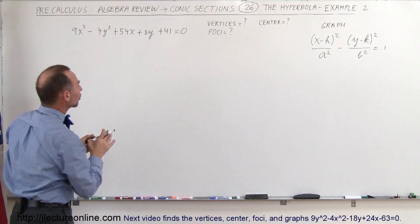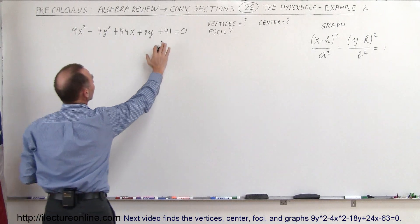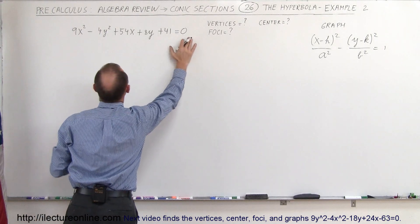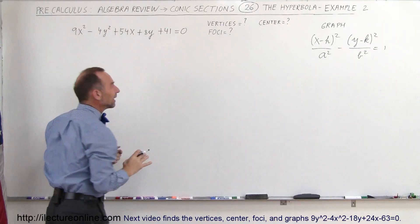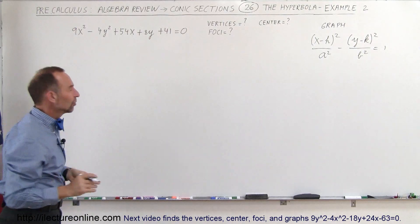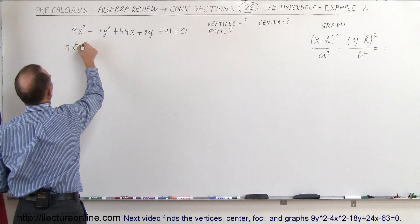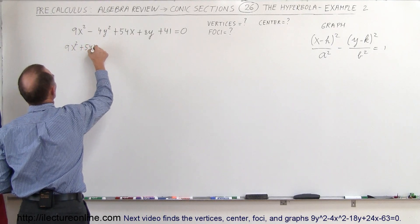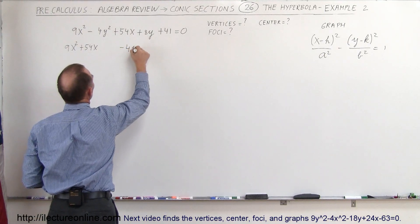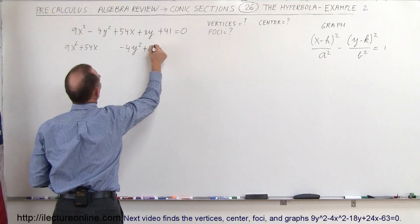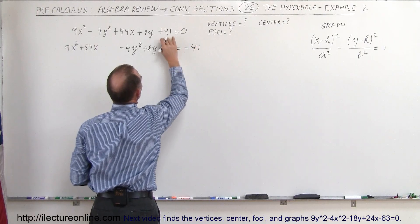We're going to use the completing the square method. That means we want to get the 41 over to the other side, bring the x terms together and the y terms together, and come up with perfect squares. So we set up: 9x squared plus 54x, leave some space, minus 4y squared plus 8y, leave some space, and that equals minus 41 after bringing the 41 across.